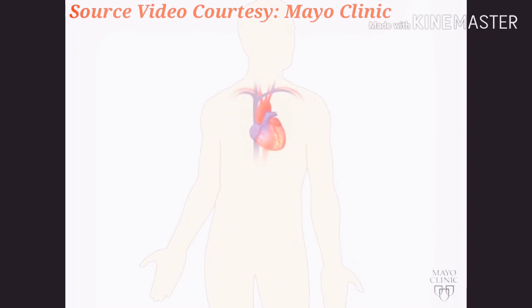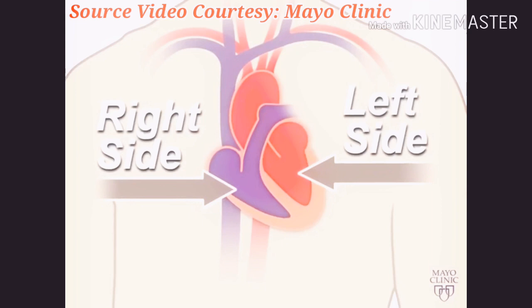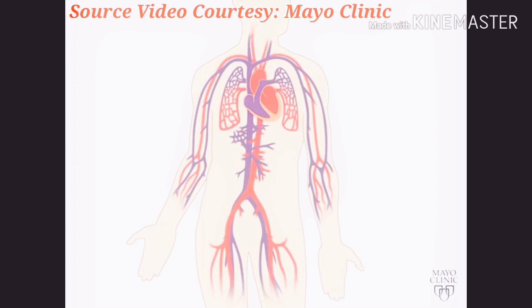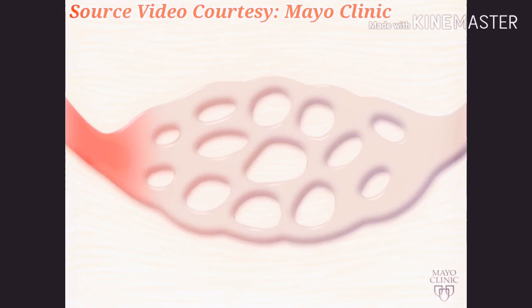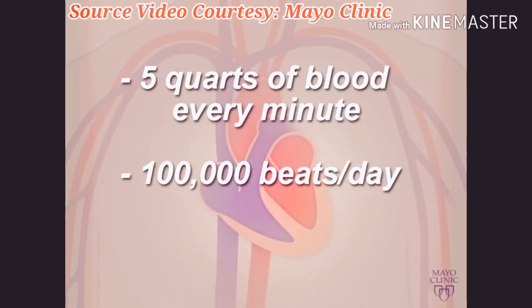Your heart is a pump — a muscular organ about the size of your fist, located slightly left of center in your chest. Your heart is divided into the right and left side; this division protects oxygen-rich blood from mixing with oxygen-poor blood. Together, your heart and blood vessels comprise your cardiovascular system, which circulates blood and oxygen around your body. Your heart pumps about five quarts of blood every minute and beats about 100,000 times in one day — about 35 million times in a year.